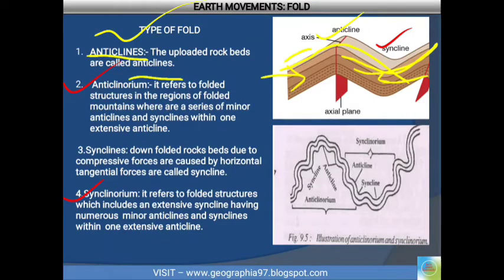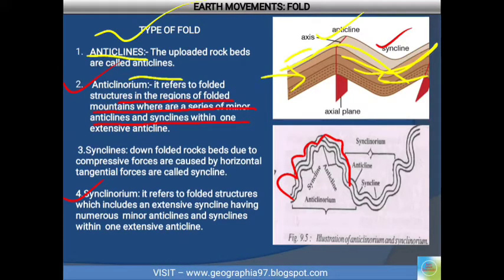Next is anticlinorium and synclinorium. Anticlinorium refers to a folded structure in the region of fold mountains where a series of minor anticlines and synclines exist within an extensive anticline. When there are numerous synclines within an extensive syncline, that is called the synclinorium.